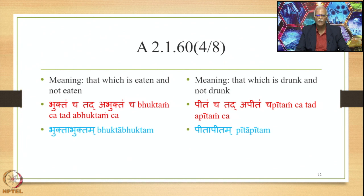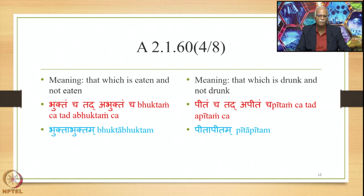Similarly, for the meaning 'that which is drunk and not drunk,' we have Pitam cha tat Apitam cha. Pita is derived from the verbal root Pa by adding the suffix Kta, not qualified by negation. Apita also has Pita derived from verbal root Pa with suffix Kta, but qualified by the negation marker A. Pita and Apita are co-referential, referring to one and the same entity. The compound takes place between them and we get Pitapita as the finally derived compound output, and Pitapitam as the case ending.